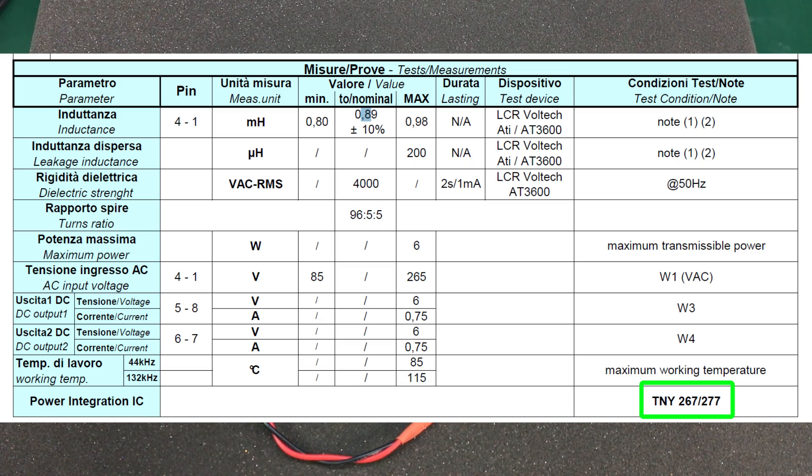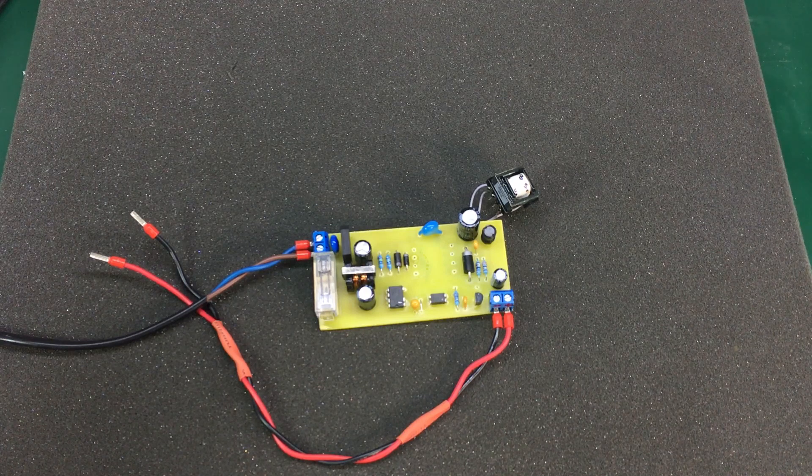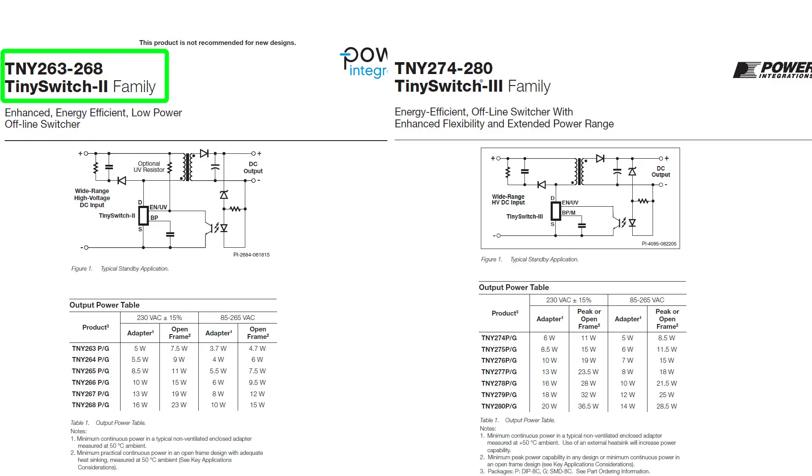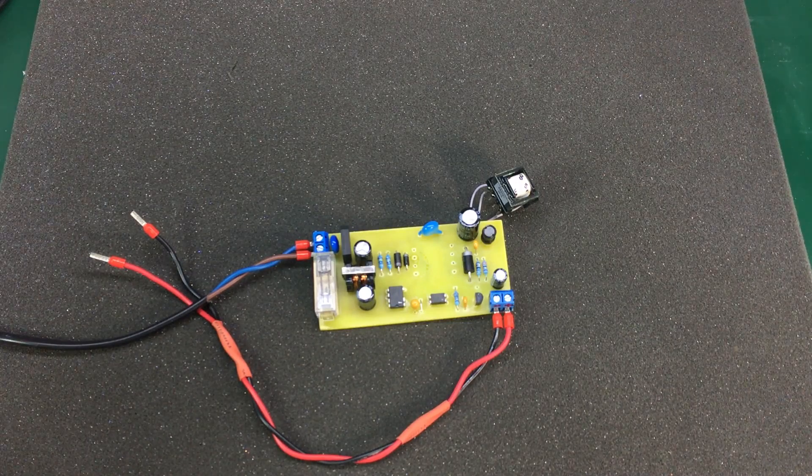But a viewer commented and said maybe the transformer datasheet meant it was compatible only with those two, considering the slash between the part numbers. And it kind of makes sense now because the TNY-267 is part of the Tiny Switch 2 family while the TNY-277 is part of the Tiny Switch 3 family. They even have different pinouts, so I don't think they would have specified a whole range of devices across different product families in the datasheet of the transformer. But what those two have in common is the same power rating of 13 watts, so with that in mind I ordered a couple of TNY-277, which brought me to this part 2 video.